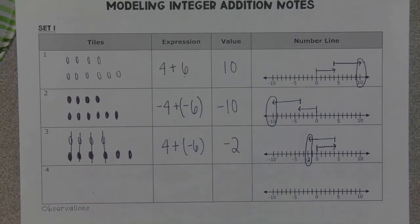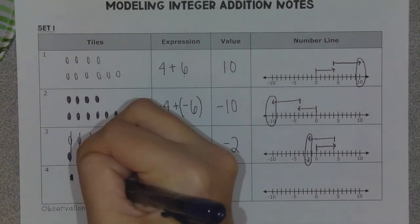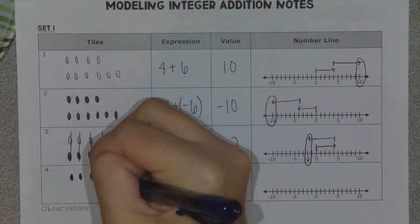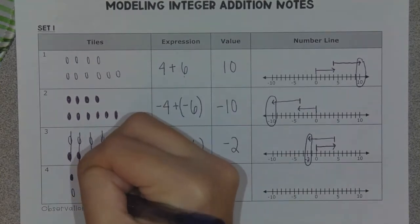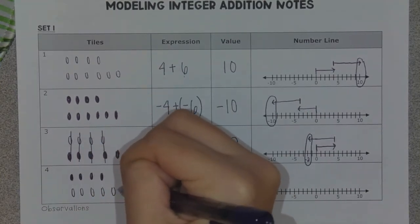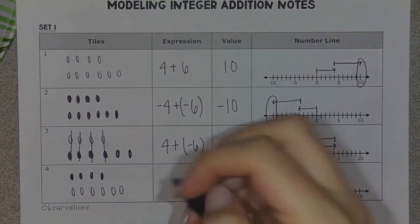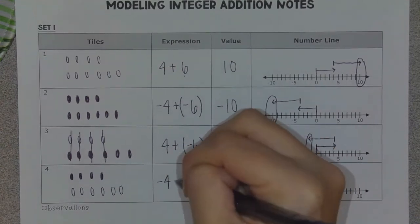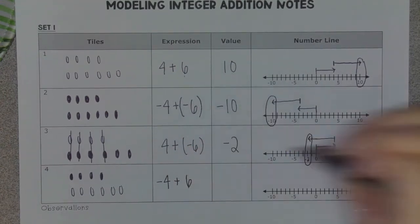One more. This time we'll do four negatives and six positives. So I'm going to write my expression: this time I have negative four plus six.